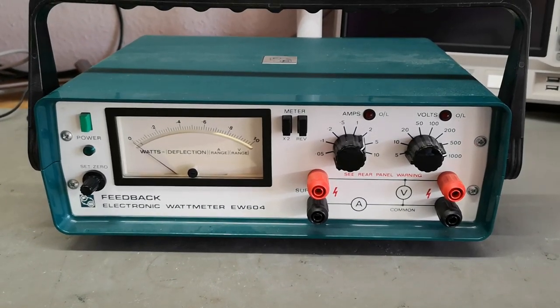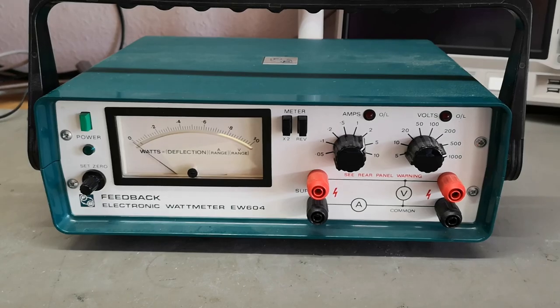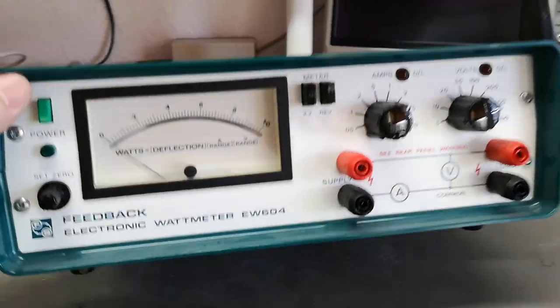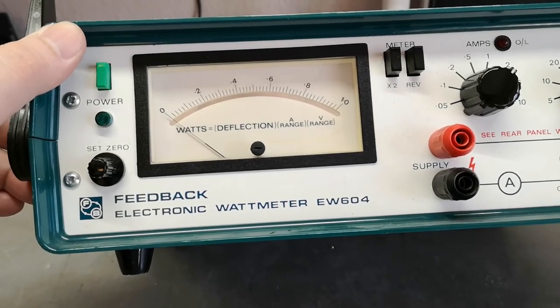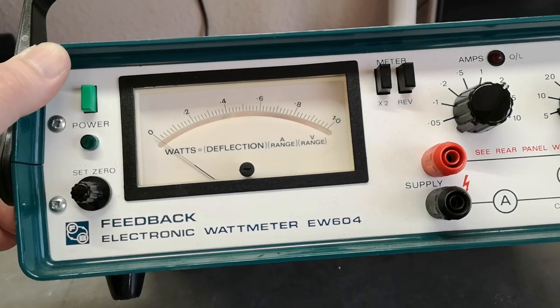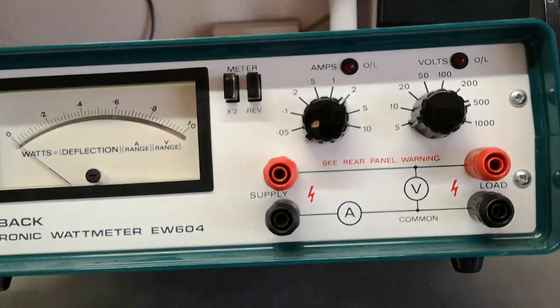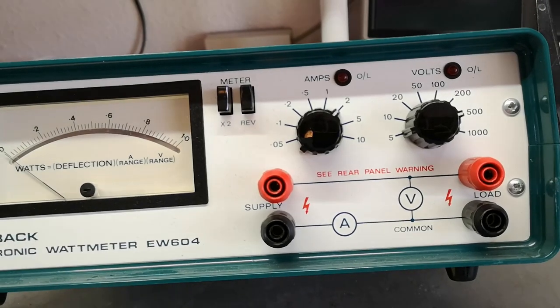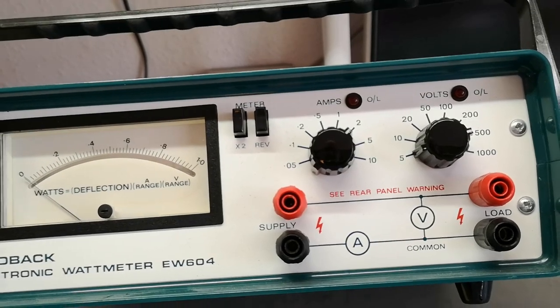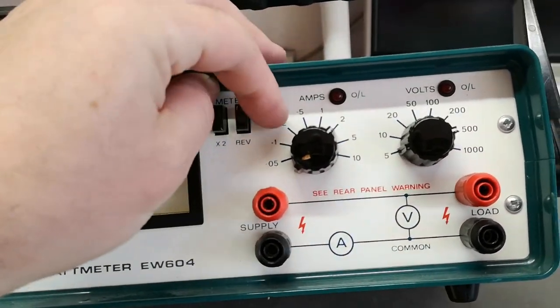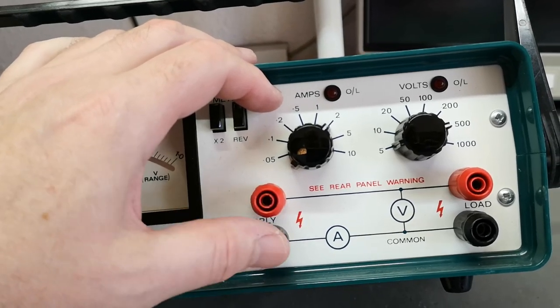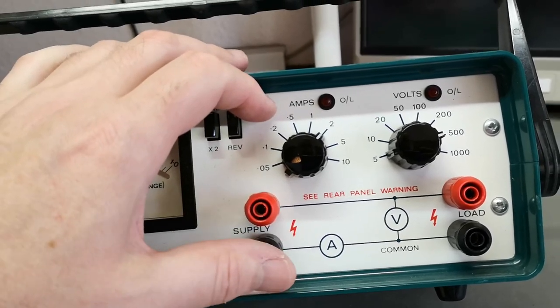Welcome to a new test and teardown video. This time it's a wattmeter from Feedback Electronic, called the EW604. This is of course for AC mains, but it will actually do a lot more than just AC mains. I think it's rated all the way from 10 hertz to kilohertz.